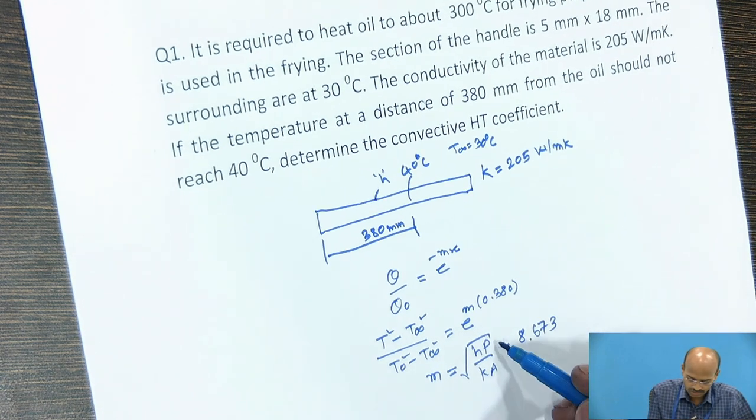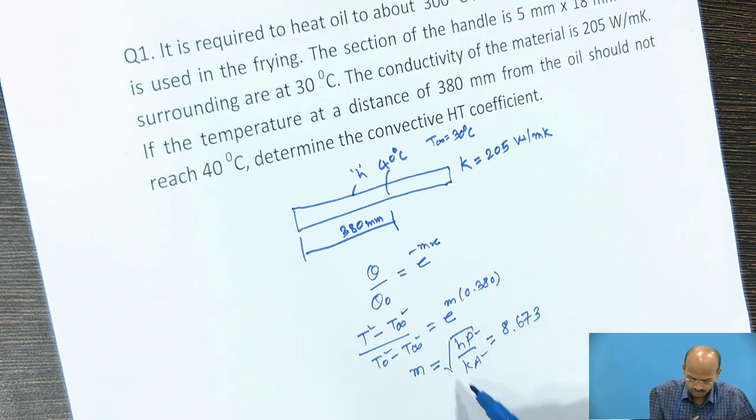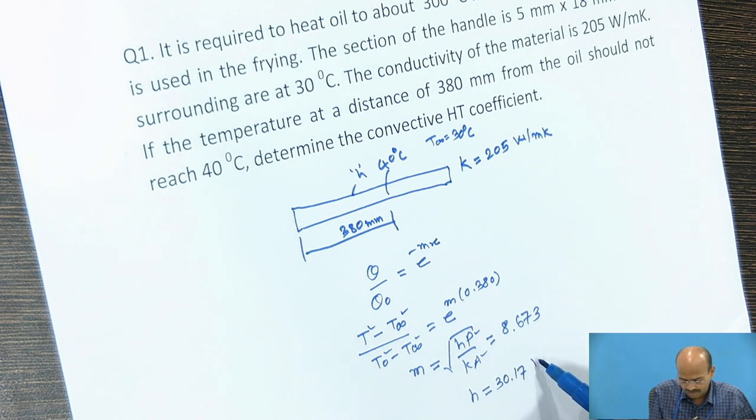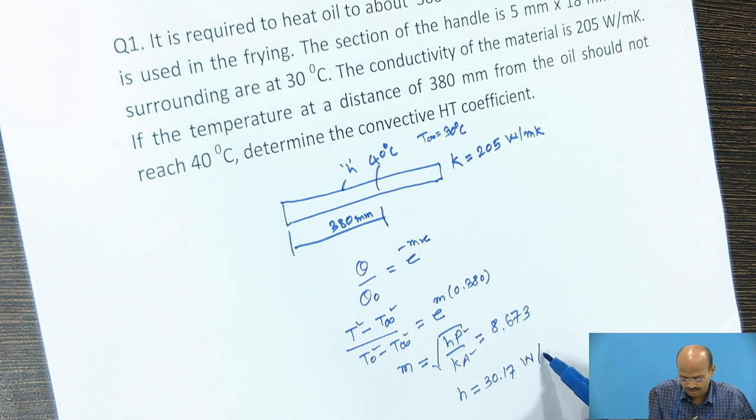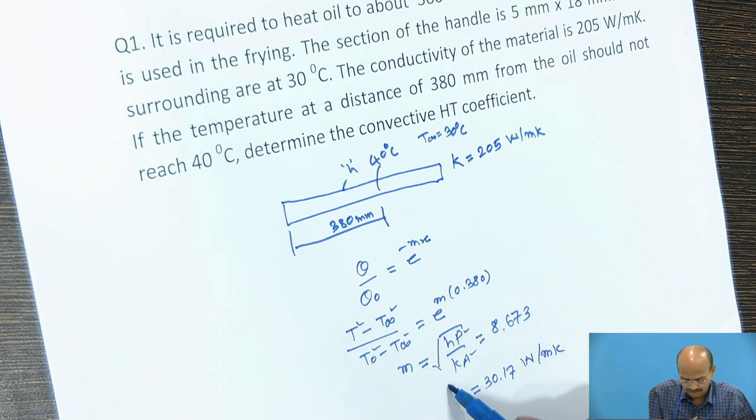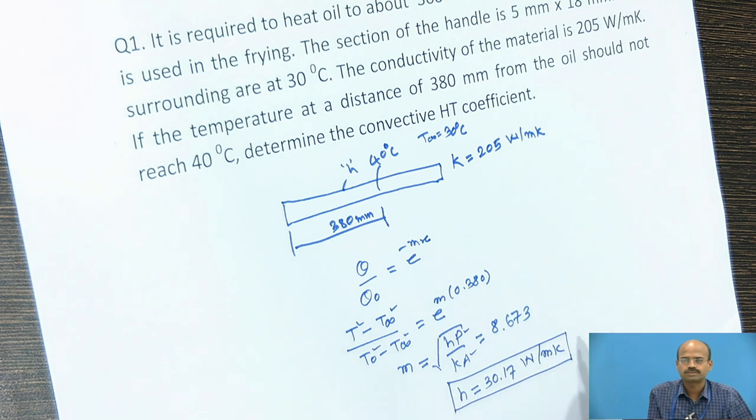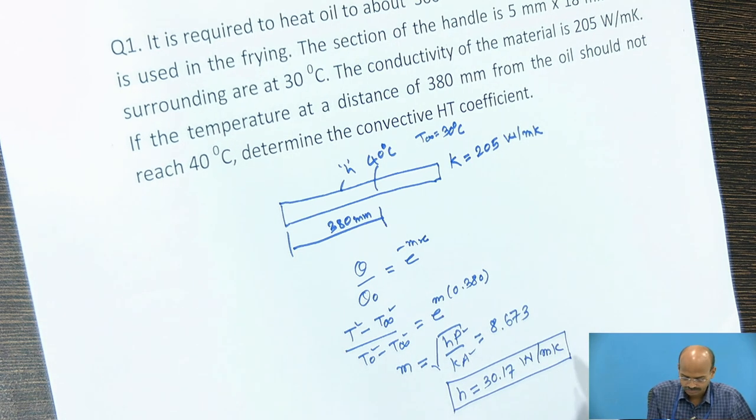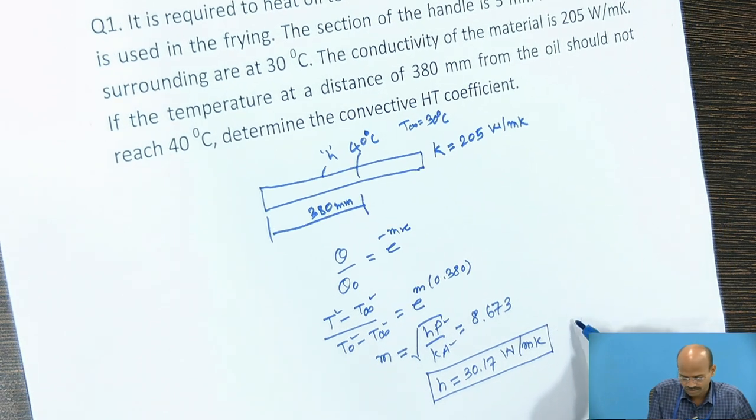Now we can calculate perimeter, area. KA is also given. So after substituting the values, we will get h as 30.17 W/mK. So this is the convective heat transfer coefficient. This is the answer.